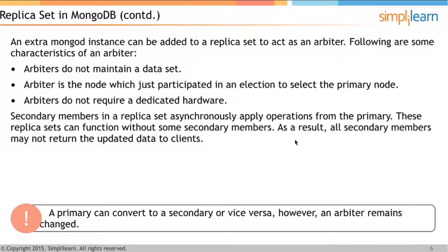An extra MongoDB instance can be added to a replica set to act as an arbiter. The arbiter is specifically added so that the total number of instances is odd, ensuring a majority can be achieved if the primary goes down and an election takes place. Arbiters do not maintain a data set; their only purpose is to participate in elections.